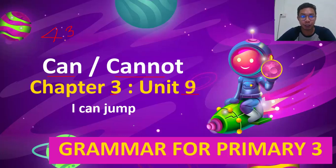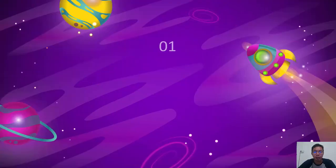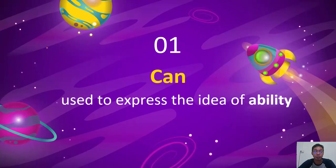Today's learning objective: you will learn how to use can and cannot. So, number one — can. Can is used to express the idea of ability. Ability means what you can do and what you can't do.